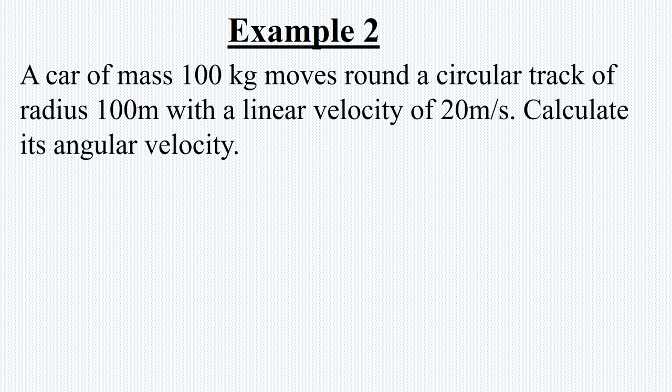Example 2: A car of mass 100 kilograms moves round a circular track of radius 100 meters with a linear velocity of 20 meters per second. Calculate its angular velocity. Solution: